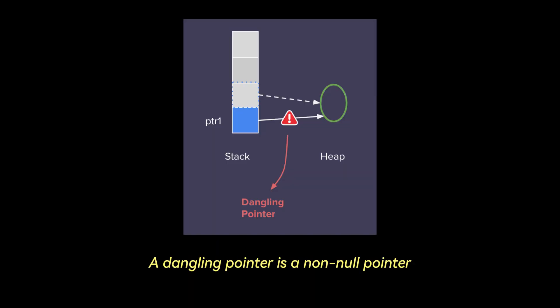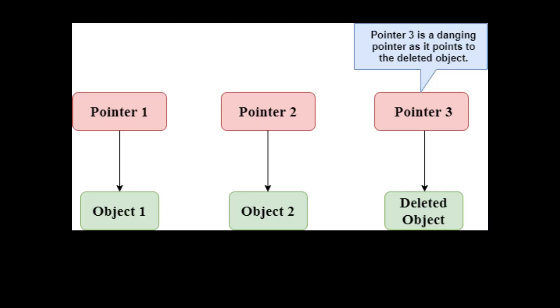Number two is dangling pointers. A dangling pointer is a non-null pointer which points to an unallocated or already freed memory area. This means that it points to invalid data or data which is not valid anymore. A very simplified example of how a dangling pointer might arise is when a pointer is pointing at a memory address of a variable, but after some time that variable is deleted from that memory location, while the pointer is still pointing to it.